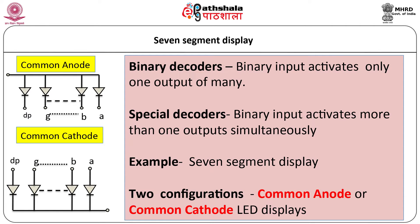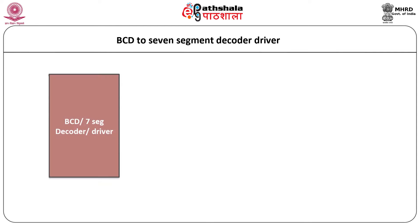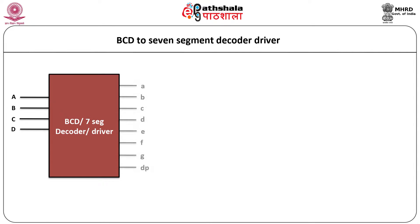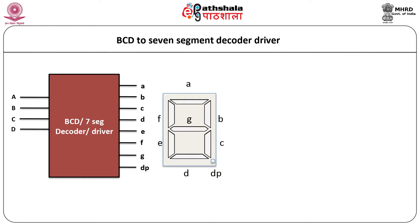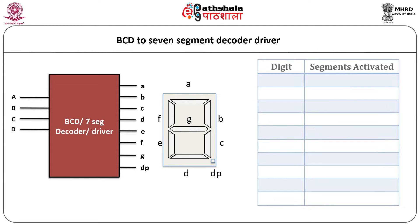The logic symbol of BCD to 7-segment decoder/driver has 4 inputs and 8 outputs. This BCD to 7-segment decoder generates a 7-segment code in response to a binary code for driving the 7-segment display. In order to display a decimal digit, it is necessary for the decoder to activate the desired segments. Let us now prepare a table for displaying a decimal digit and the corresponding activated segments.